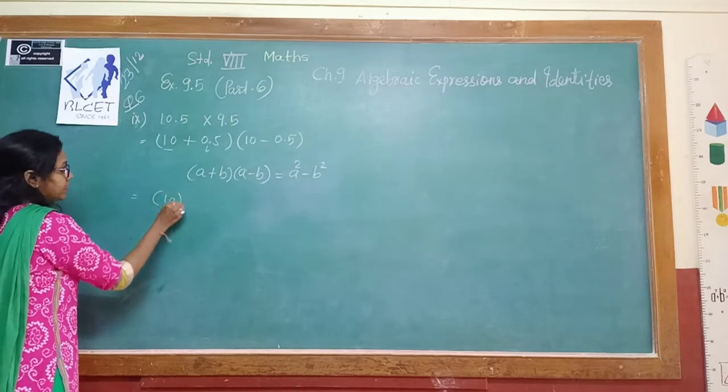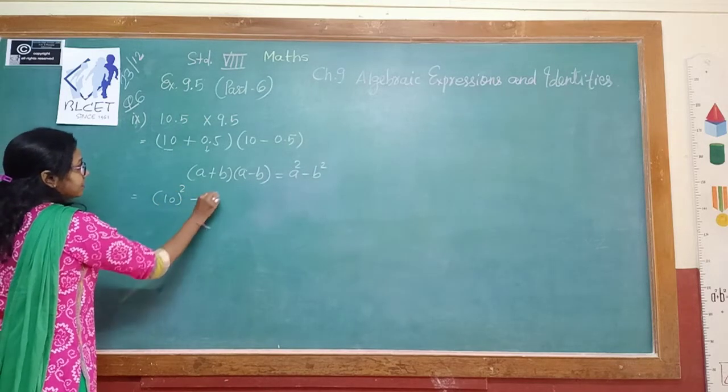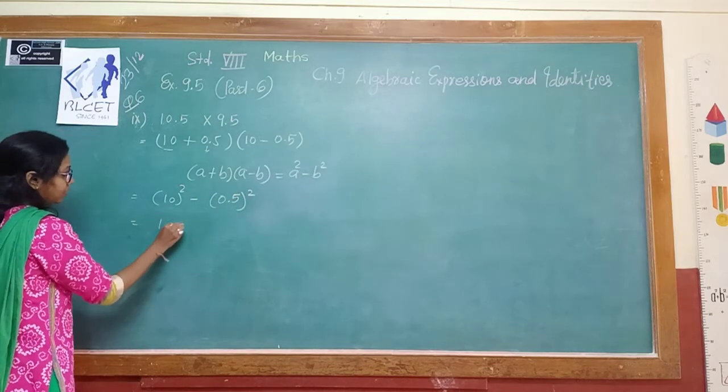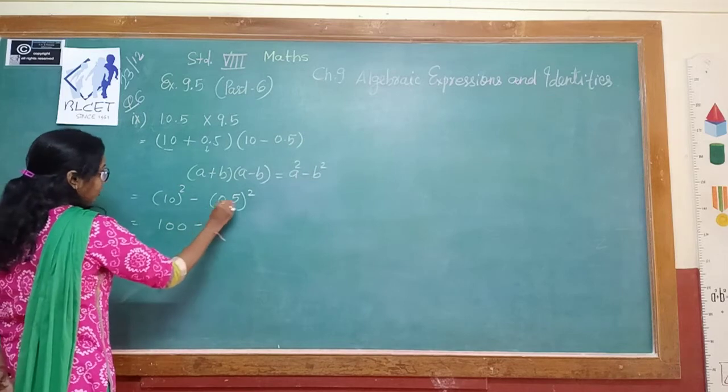So A squared means 10 squared minus 0.5 squared. 10 squared is what? 100. Minus 0.5 squared is what?